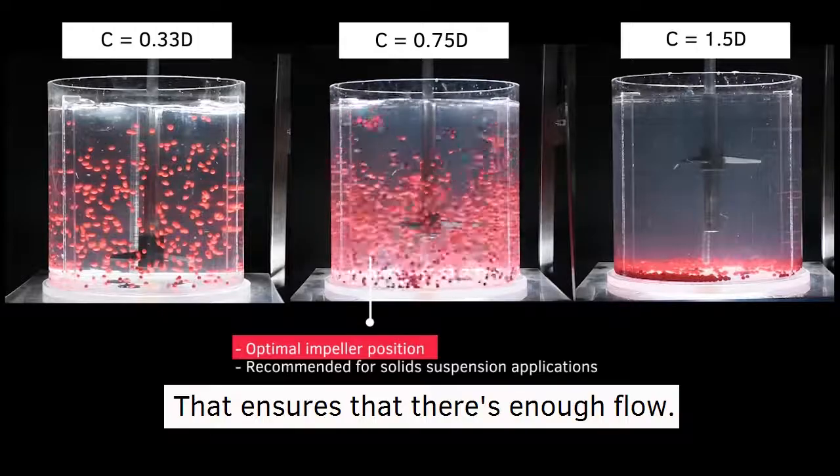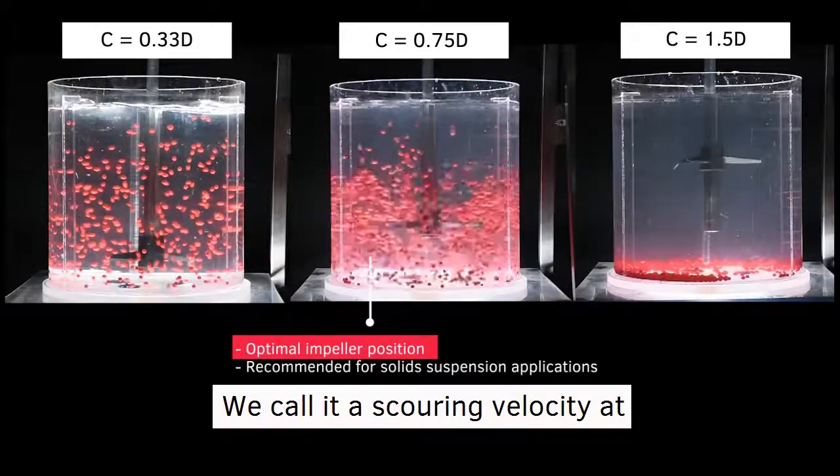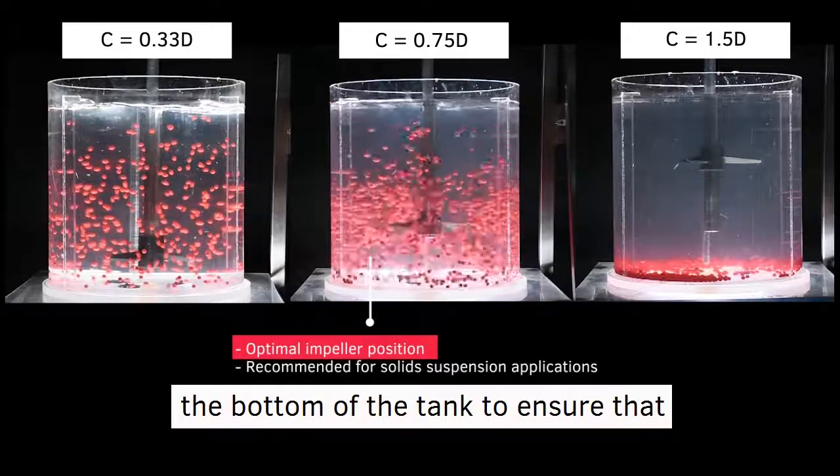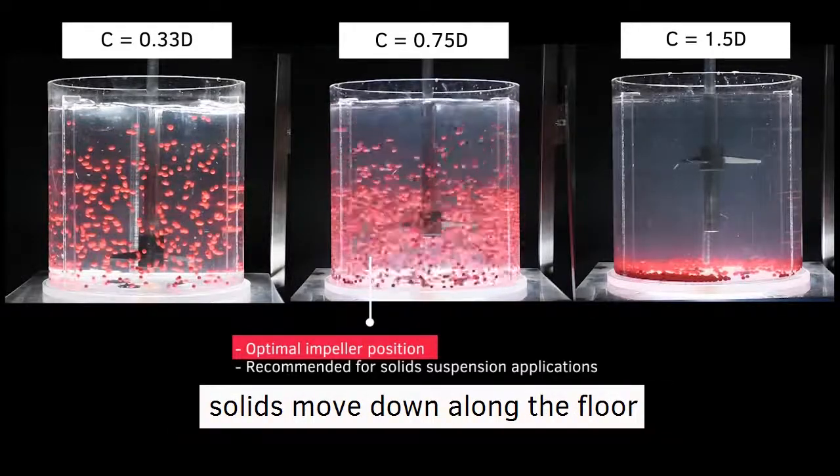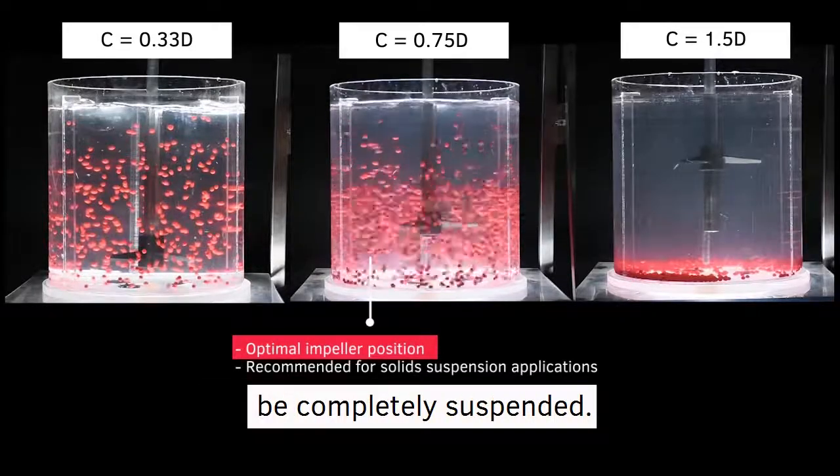This ensures enough flow—what we call scouring velocity—at the bottom of the tank, ensuring that solids move along the floor and up the side of the tank to be completely suspended.